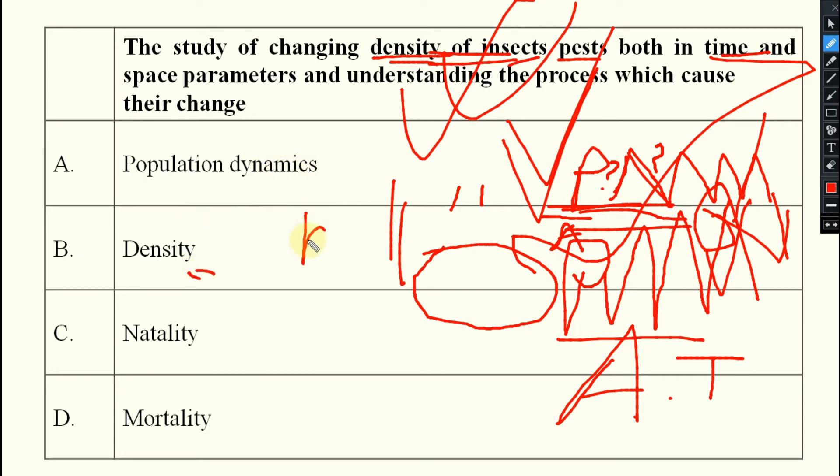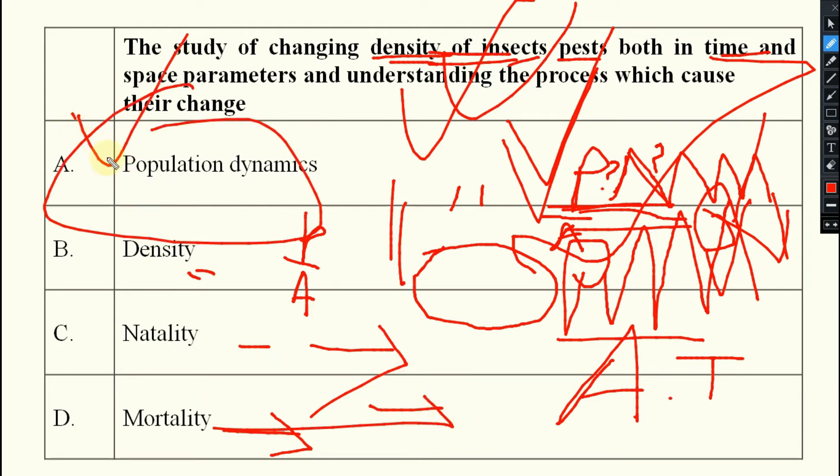You see, density means what? You already have discussed. Natality means the rate at which what happens? Populations are added. Mortality means they are lost. So the answer will be what? Population dynamics.